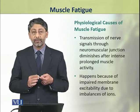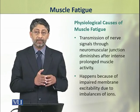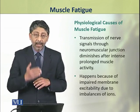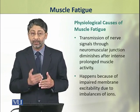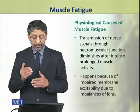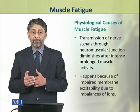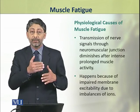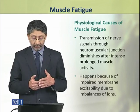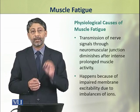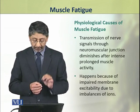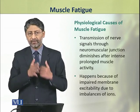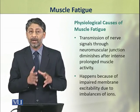First, we shall discuss the neuromuscular junction. The transmission of nerve impulses is affected due to ion imbalances occurring at this site.